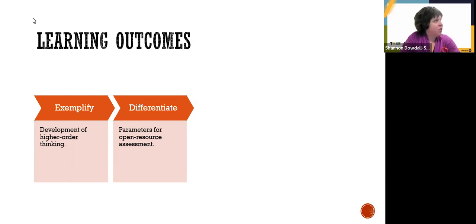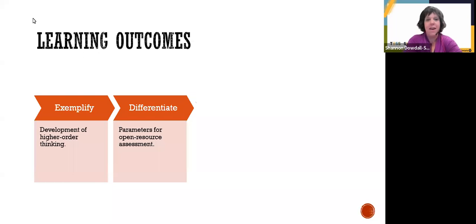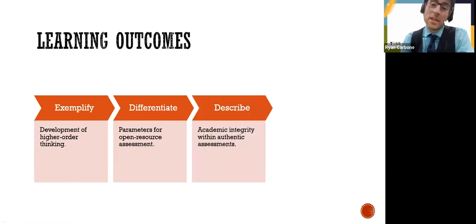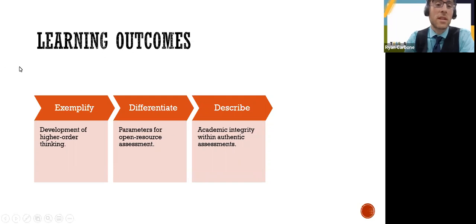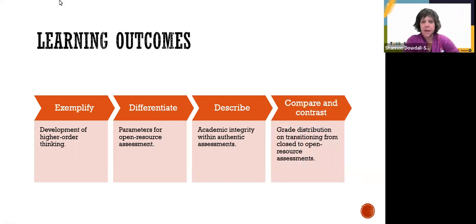Before going on with objective three, I want to clarify — because open access resources are really hot right now and we also call them OERs — this is not to be confused with OERs, textbooks you can get as open access. This is open resource, and Ryan will clarify that further. Another hot topic has been academic integrity and how we can promote it through the creation of authentic assessments. Finally, we'll compare grade distributions looking at closed versus open resource.